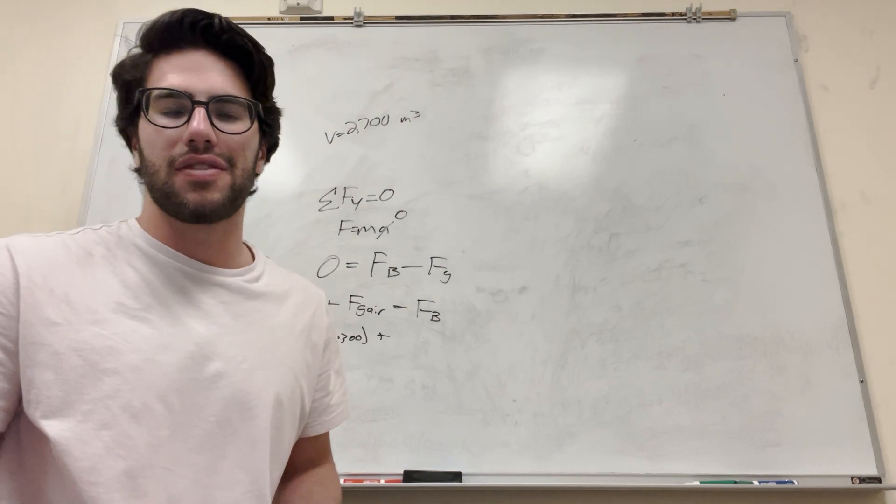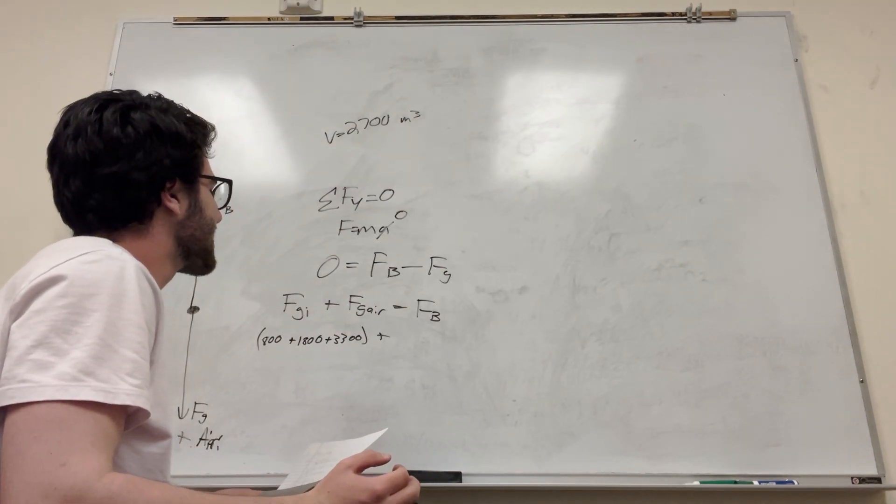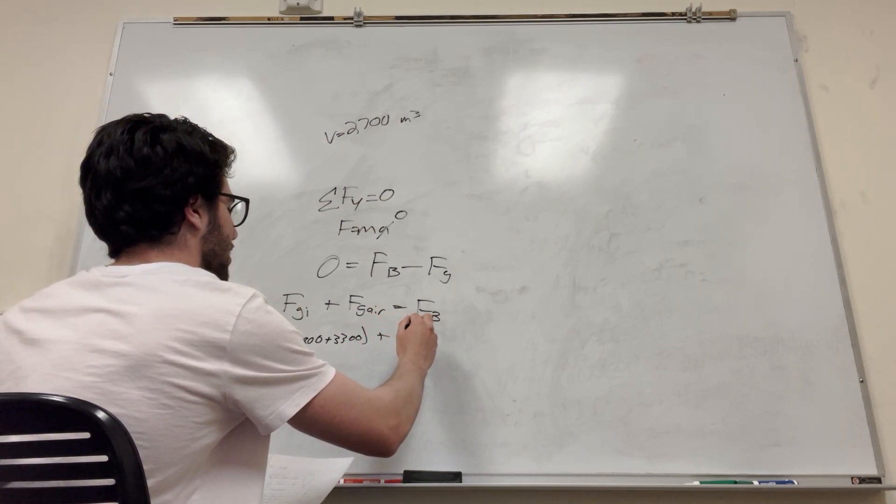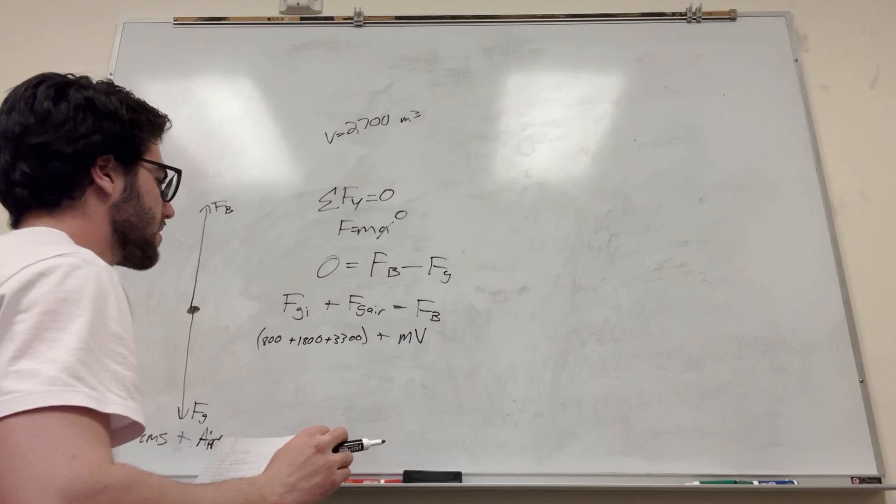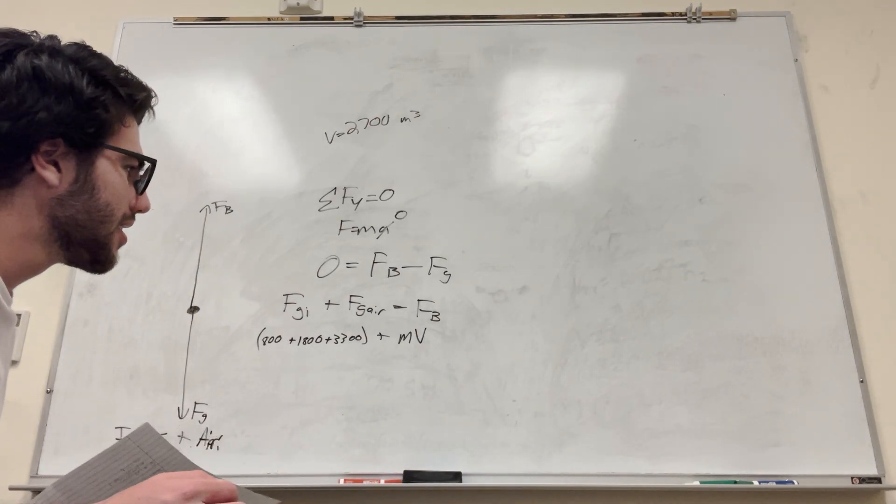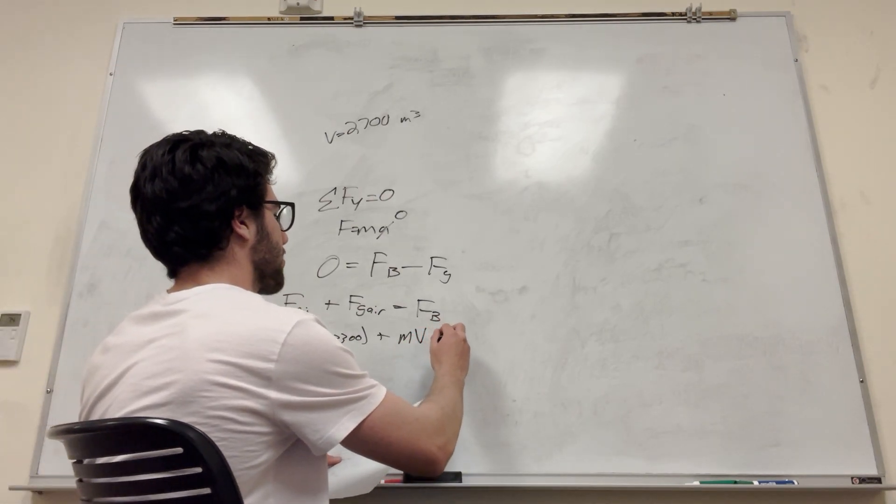And then the force of gravity of air. So we have the volume of, so volume is equal to 2,700 meters cubed, right? And it gives us, what are we trying to find? So it's going to be mass times the volume. So we don't want mass, right? We don't have the mass. So let's just try it out the second part.